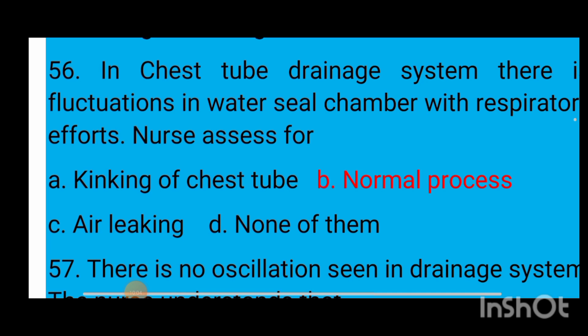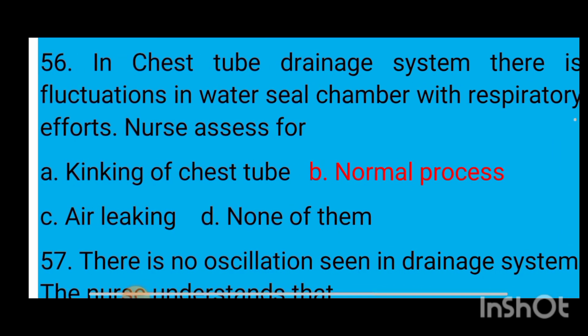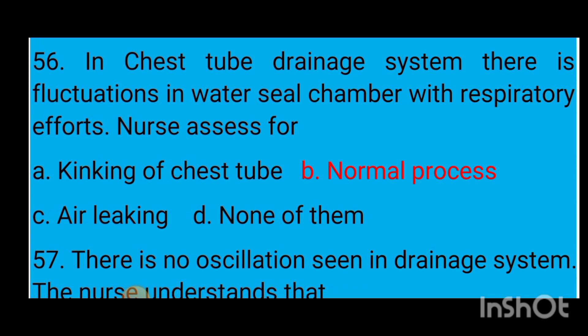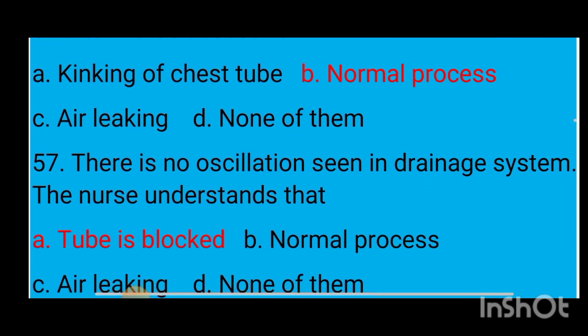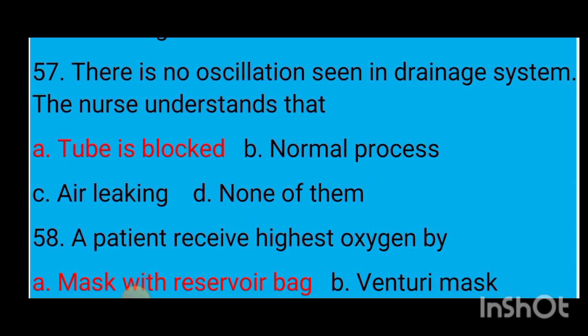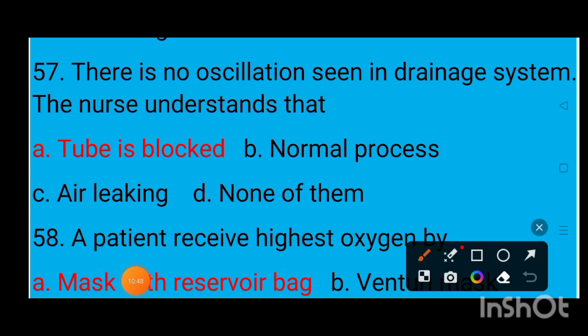Question number 56: In a chest tube drainage system, there is fluctuation in the water seal chamber with respiratory effort. The nurse assesses for — option A kinking of chest tube, option B normal process, option C air leaking, option D none of them. The correct answer is normal process. When there is no oscillation seen in the drainage system, the nurse understands that option A the tube is blocked — the correct answer is tube is blocked.